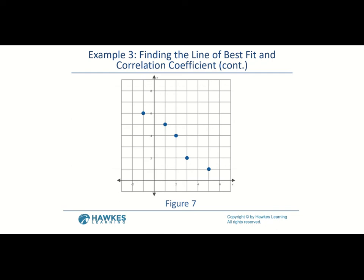We have five points that look close to a line but don't form a perfect line. Reading the ordered pairs from the graph: (−1, 6), (1, 5), (2, 4), (3, 2), and (5, 1). We'll use these five points to find the line of best fit.